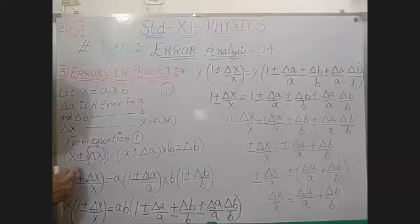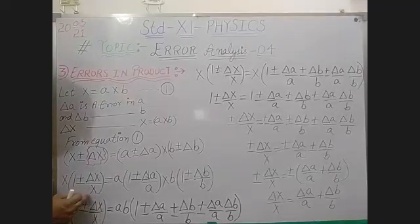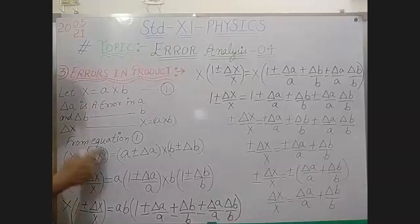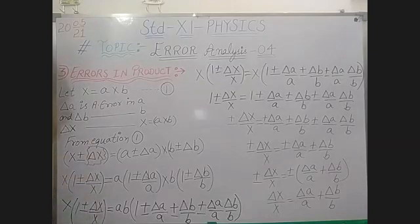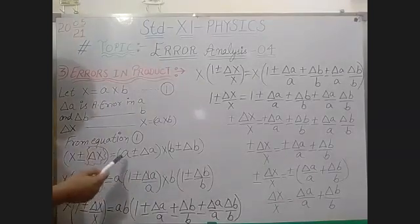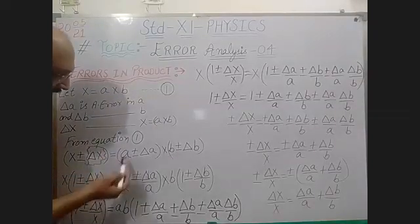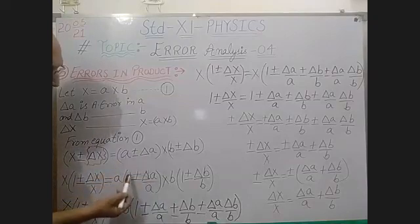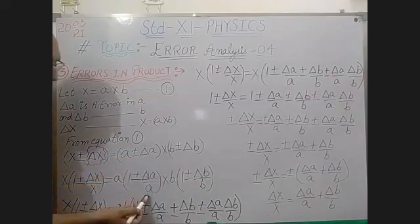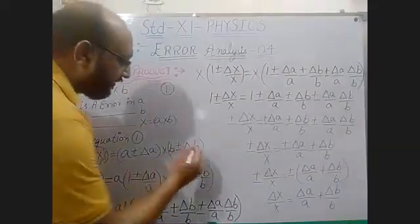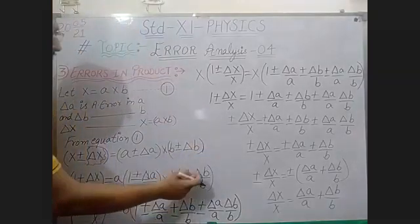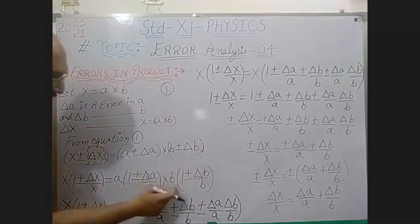Instead of x, you write 1 ± (delta_x / x), since x goes to the denominator. Opening this out: x(1 ± delta_x/x). Do the same for a ± delta_a — take common a from there, giving a(1 ± delta_a/a). Do the same for b ± delta_b, giving b(1 ± delta_b/b).